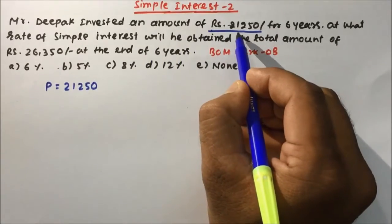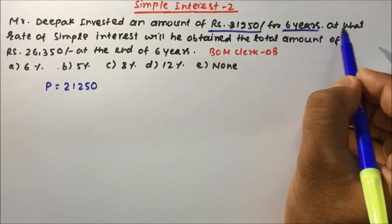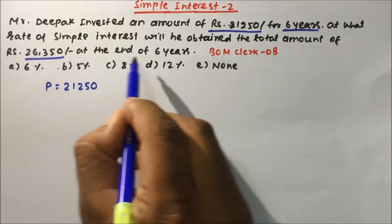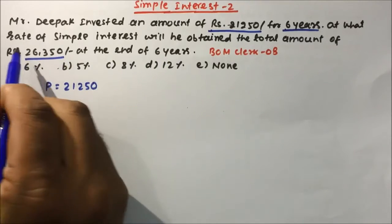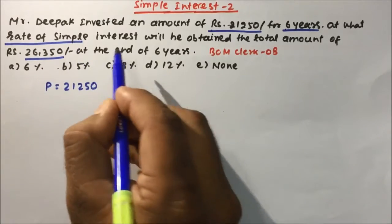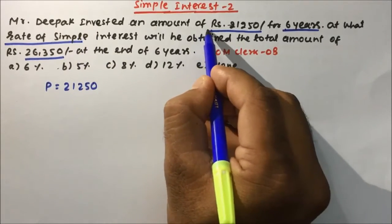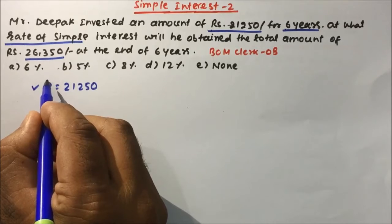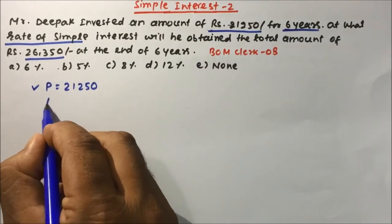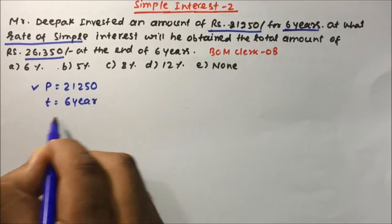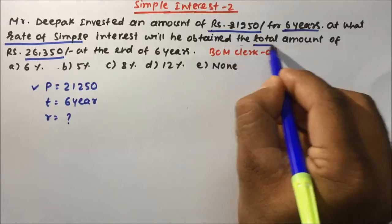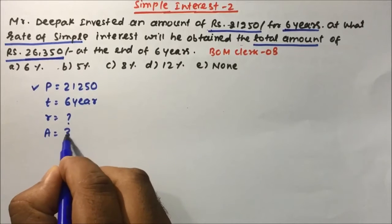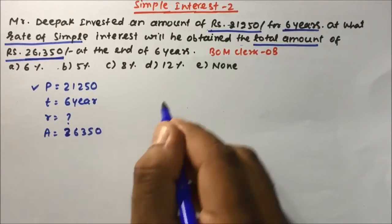Mr. Deepak invested an amount of 21,250 rupees for six years. At what rate of simple interest will he obtain the total amount of 26,350 rupees at the end of six years? So basically, they are asking the rate of simple interest. Principal is 21,250 rupees, time is six years, and total amount is 26,350 rupees.